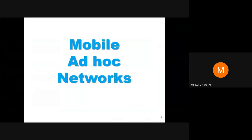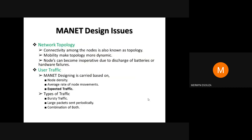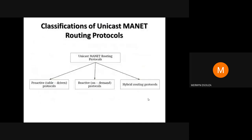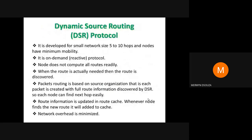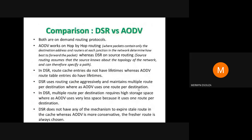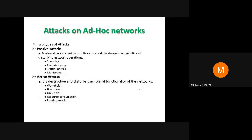Students, we have been studying MANETs for the last few lectures as part of your Unit 4. We have reached almost the last topic in Unit 4, so we are dealing with security issues. We saw the different kinds of security issues that arise in MANETs and the different types of attacks that are possible. We also saw how the attacks are classified: as passive attacks and active attacks.